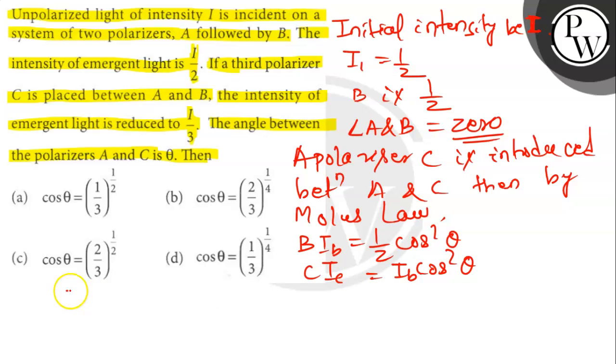So given Ic is 1 by 3. From here solving all the three equations, 1 by 3 equals 1 by 2 cos⁴ θ, which is cos θ equals (2/3)^(1/4).